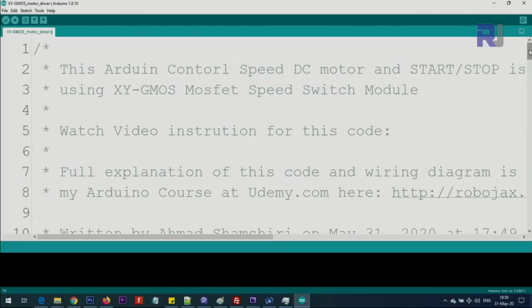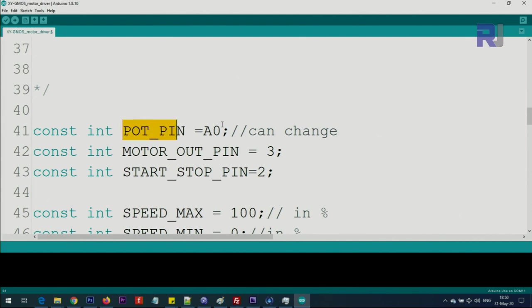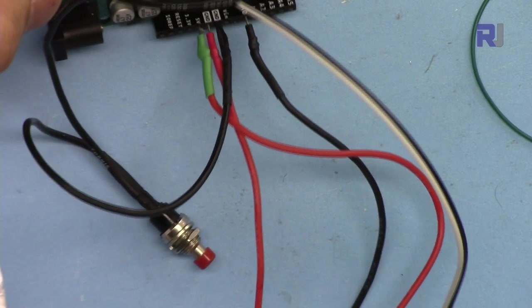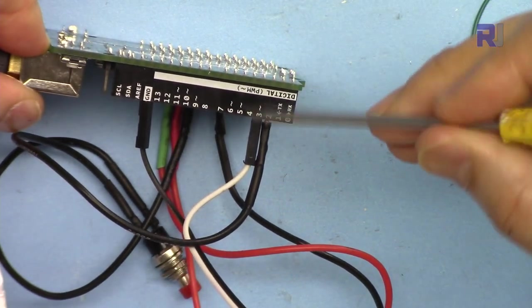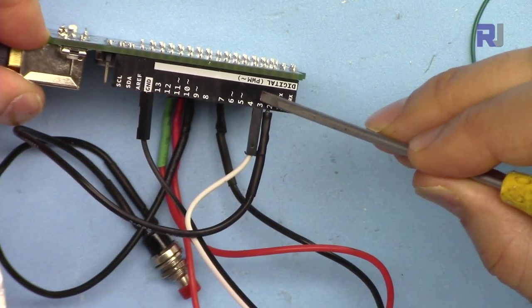Now let me explain the code. We're defining pot pin analog zero - you can select any other analog pin if you're using potentiometer. If you're using a switch you don't need to define anything here. Motor out pin is the pin sending signal to Arduino. Make sure to select a pin that has this tilde - you see 3 is pulse width modulation.